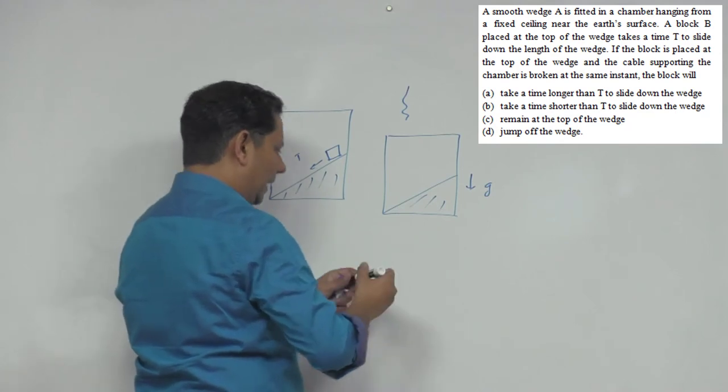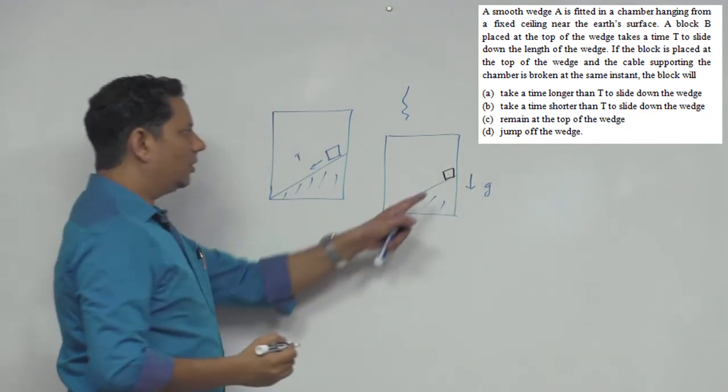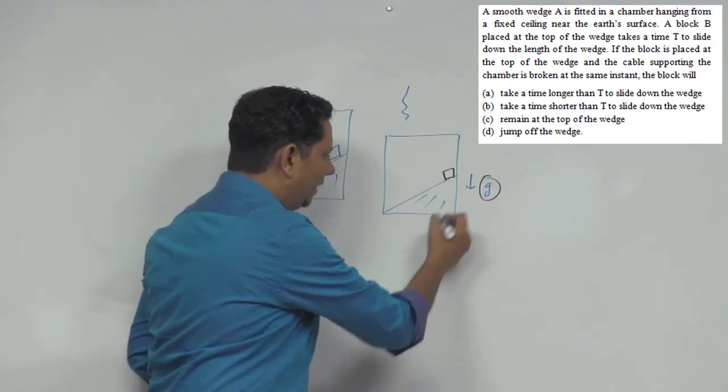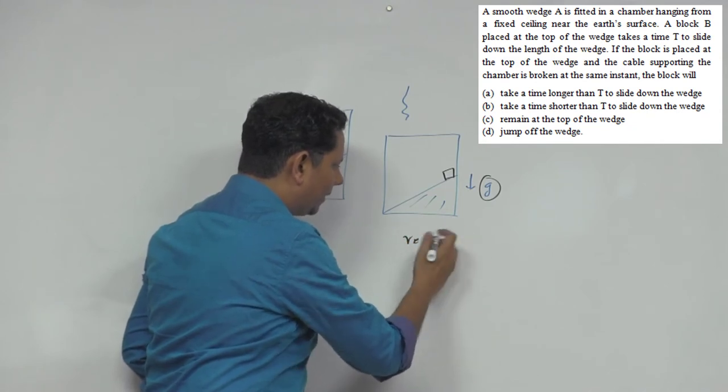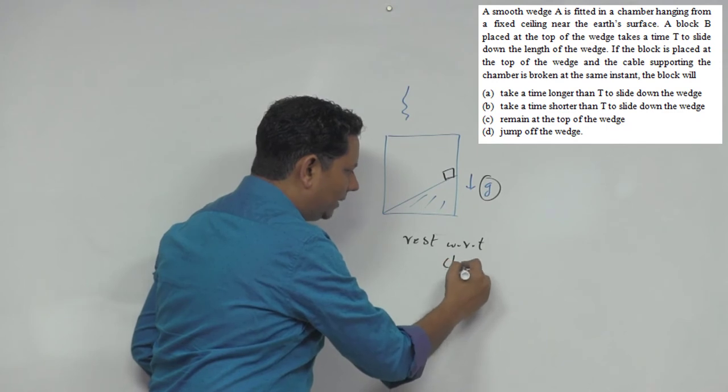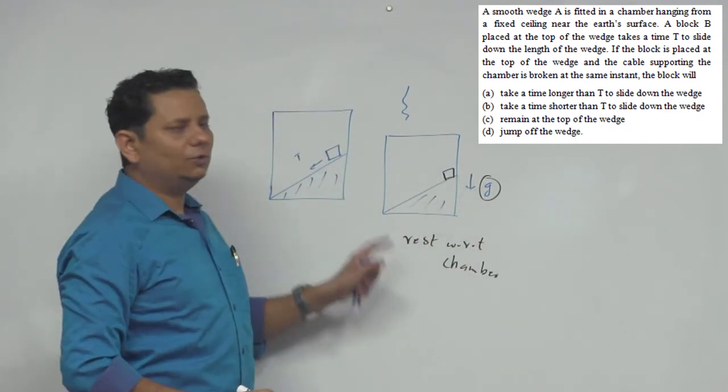Us case mein ye jo block aapka yahan par hai - ye kyunki is block ke upar bhi ab acceleration jo hai, woh g - donon ka hi acceleration aapka g ho jayega. Us case mein jo aapka block hai, woh aapka rest par rahega with respect to aapka chamber ya lift jo bhi aapne naam diya. To ye yahi par tika rahega, aage niche move nahi karega.